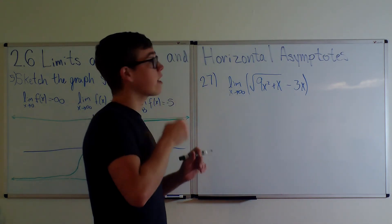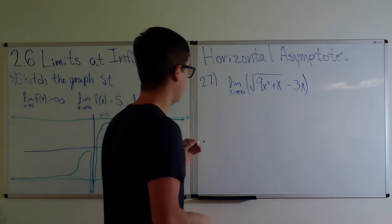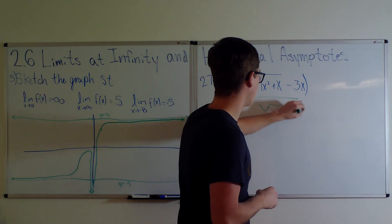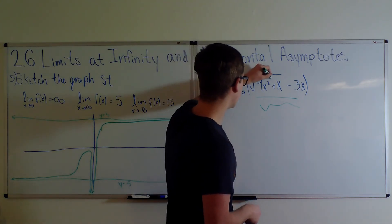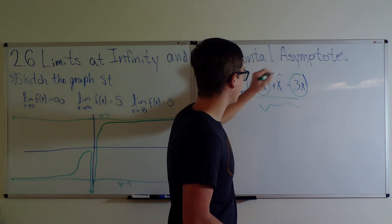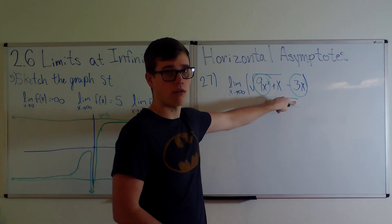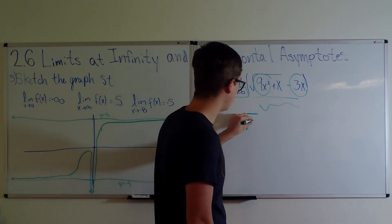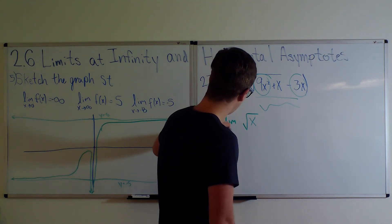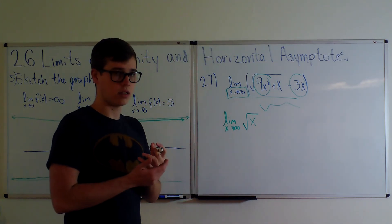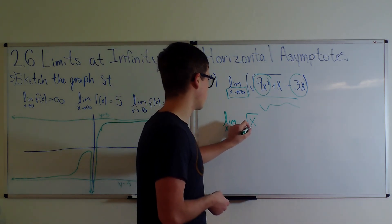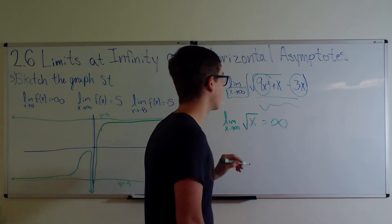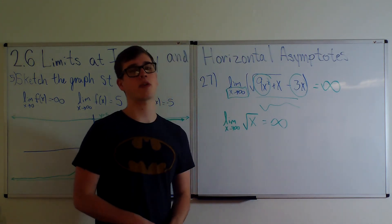For number 27, we need to find the limit as x approaches infinity of the function. Looking at it, there's nothing on the bottom — it's all on the top. You can see 9x squared under a square root, and 3x, so the square root of 9x squared gives 3x. Those cancel each other out essentially, and at infinity you're left with just the dominant term. As x approaches infinity, the square root of x approaches infinity, so this equals infinity.